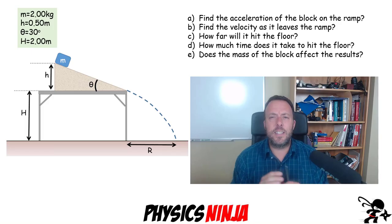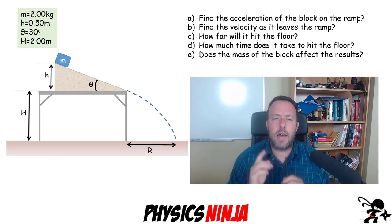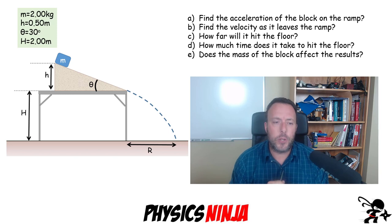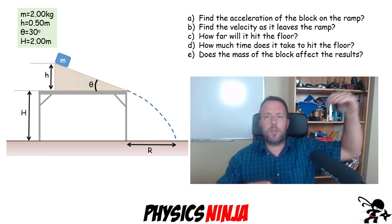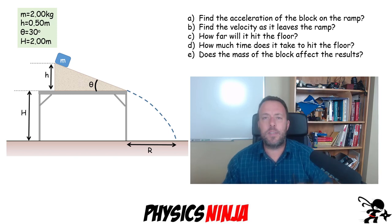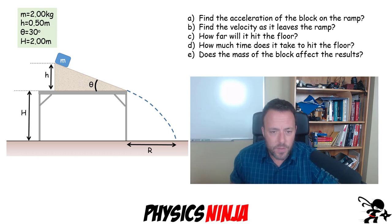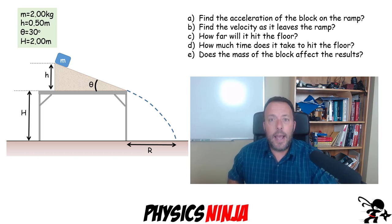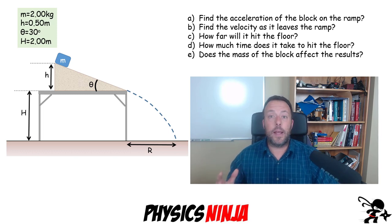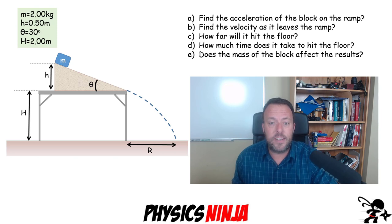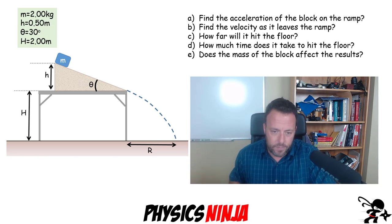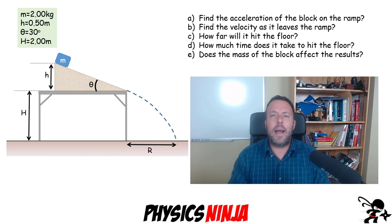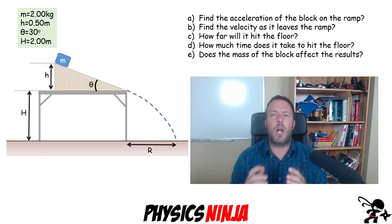Hi everybody, PhysicsNinja here. Today I have a nice kinematics problem for you. We have a block of 2kg that is going to slide down this frictionless wedge. It's eventually going to hit the end and keep going, launch off the table, and travel a certain distance that I've written as capital R. I have 5 questions to ask you concerning this problem.